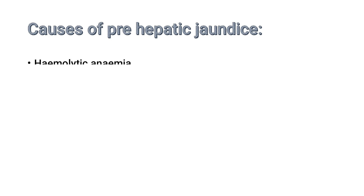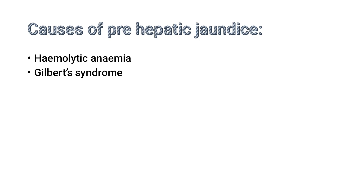The causes of pre-hepatic jaundice include hemolytic anemia, where there is excessive extravascular hemolysis. There is also Gilbert syndrome, which is a hereditary condition in which the UGT enzyme — which converts unconjugated bilirubin into conjugated bilirubin — is functioning but not functioning very well, resulting in elevated unconjugated bilirubin.